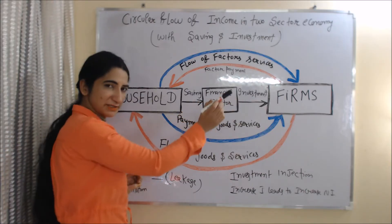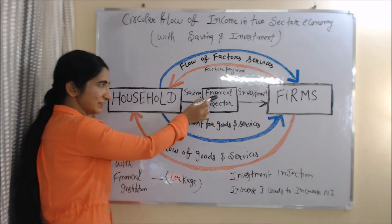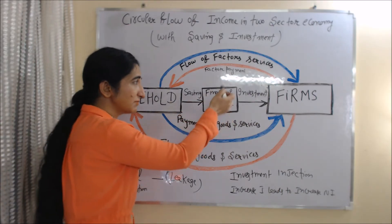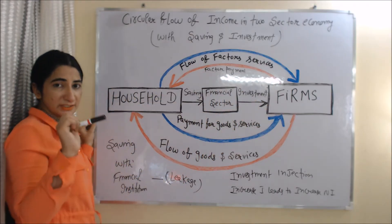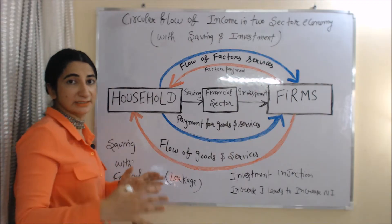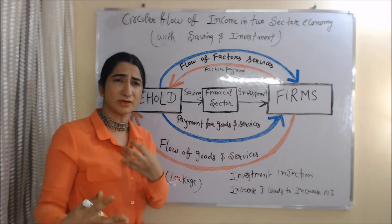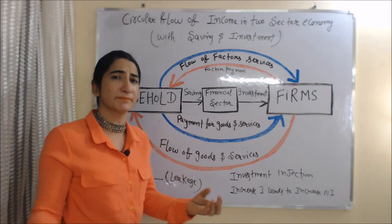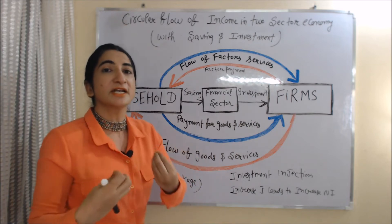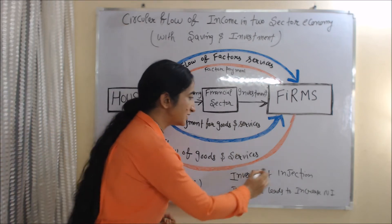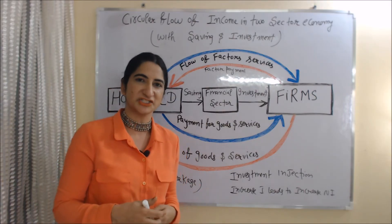The new things we add here are saving, the financial sector, and investment. Saving of the household sector flows into the financial sector, and the financial sector gives this money to business firms for investment purposes. Saving without a financial institution works as a leakage because you are not using your money for any purpose — you just keep it. On the other hand, saving with a financial institution generates investment, and investment is an injection for the economy. Increase in investment leads to increase in national income.